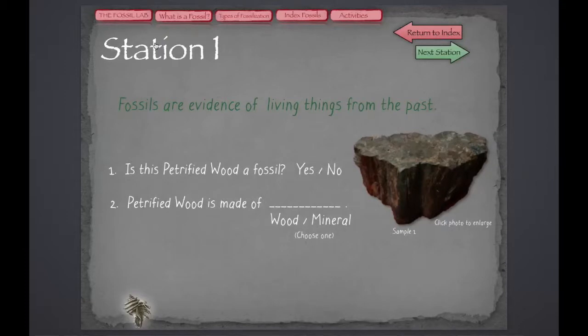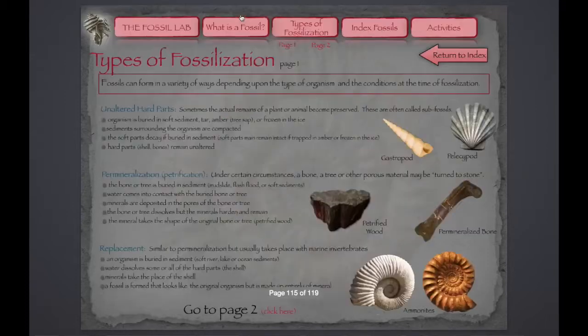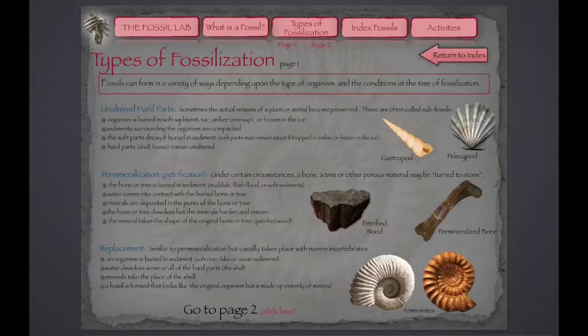But as I read this, I might not know what petrified wood is. So, by checking out types of fossilization, I can read through and see permineralization or petrification. I even see the same specimen of petrified wood that was at Station 1. And here I can get some more background information which will help me answer the question.